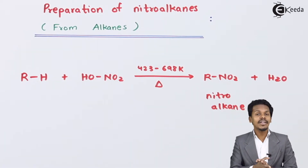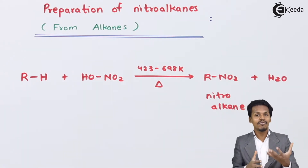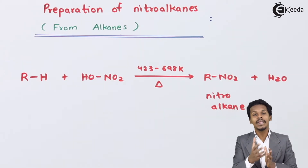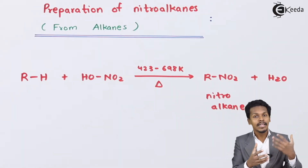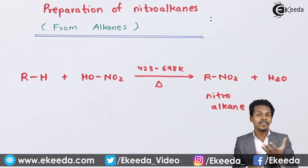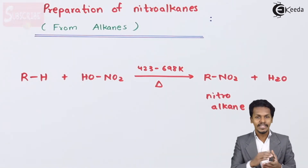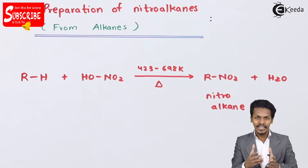If we take a smaller member of an alkane and do direct nitration on it, the product we obtain will be of higher yield — it will simply be the nitrated compound of that alkane. But if we take a higher member of an alkane and do the nitration, then a mixture of nitro compounds can be obtained. Let me give you an example to understand this concept very clearly.